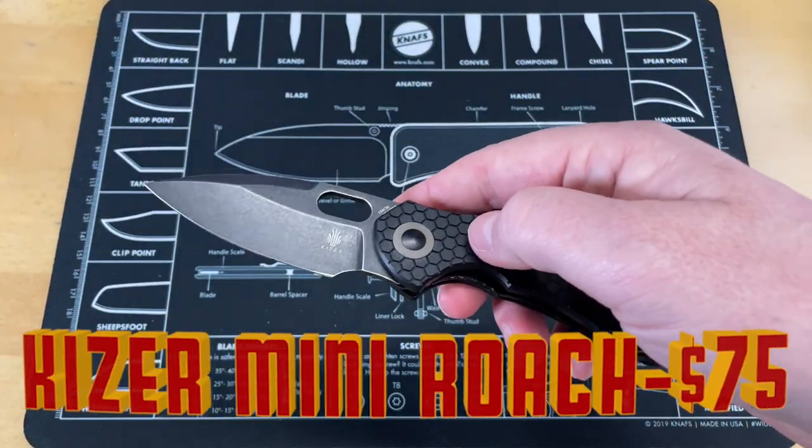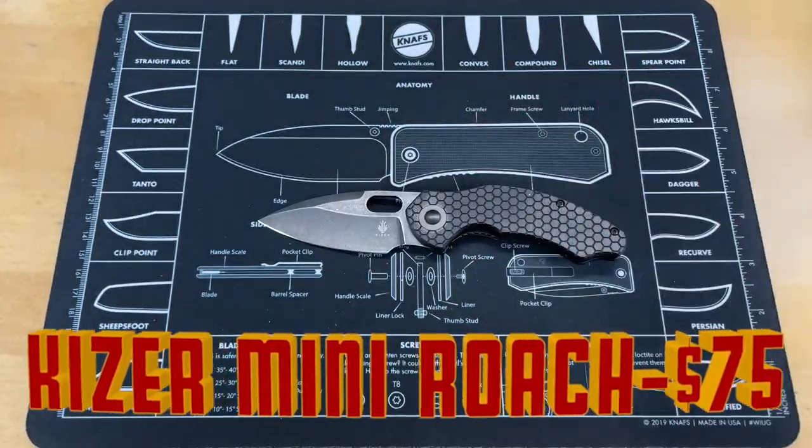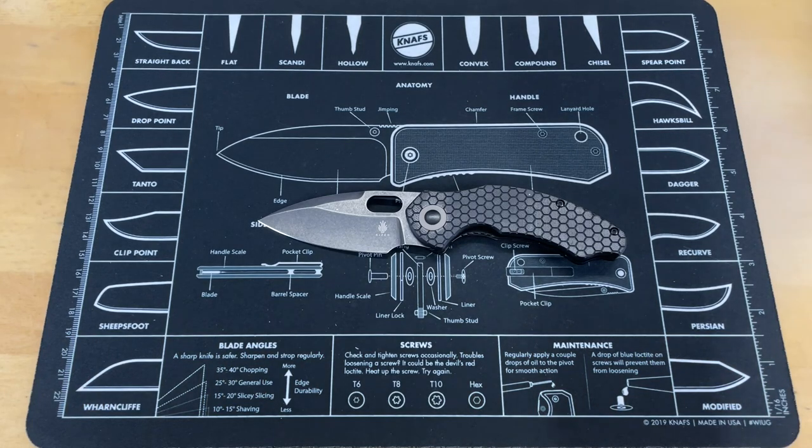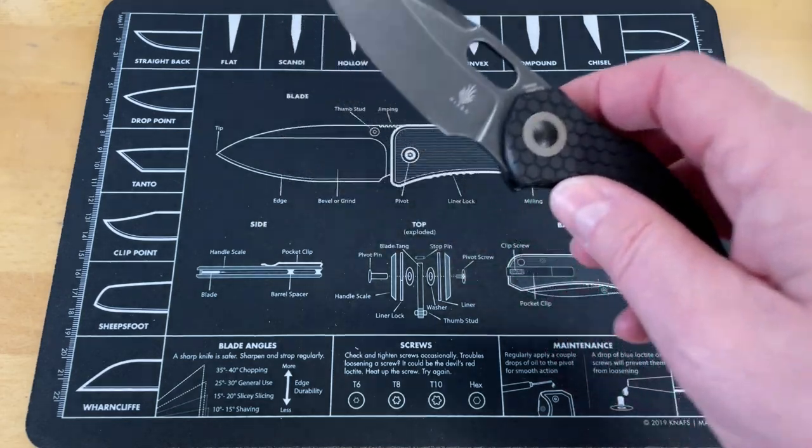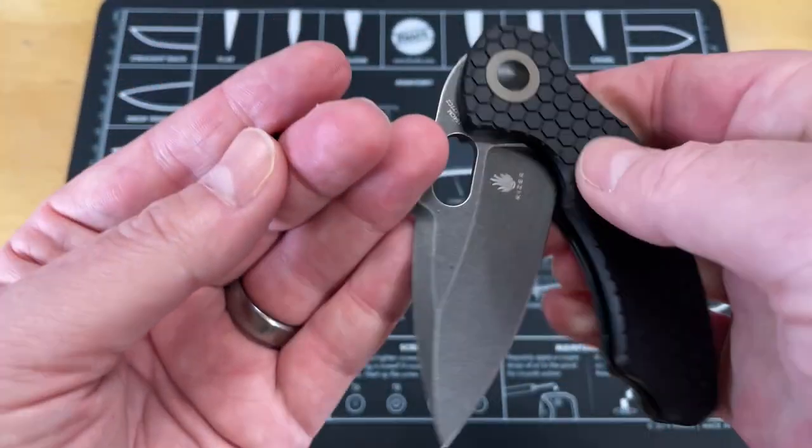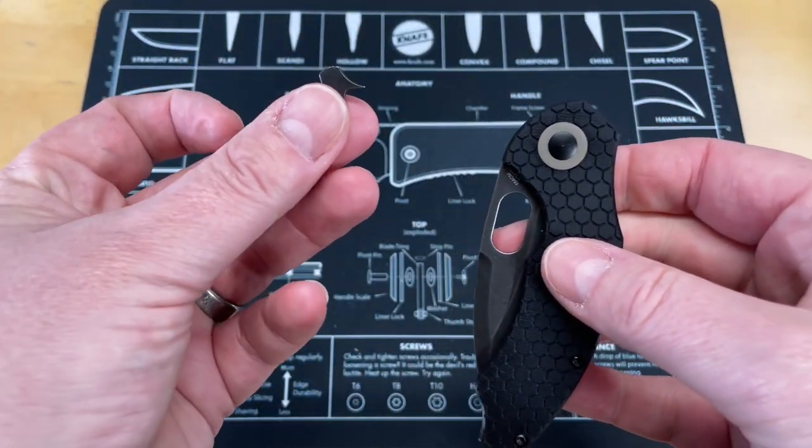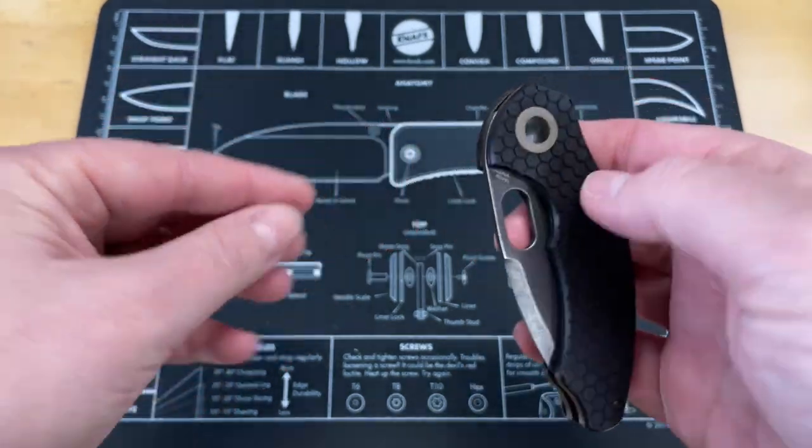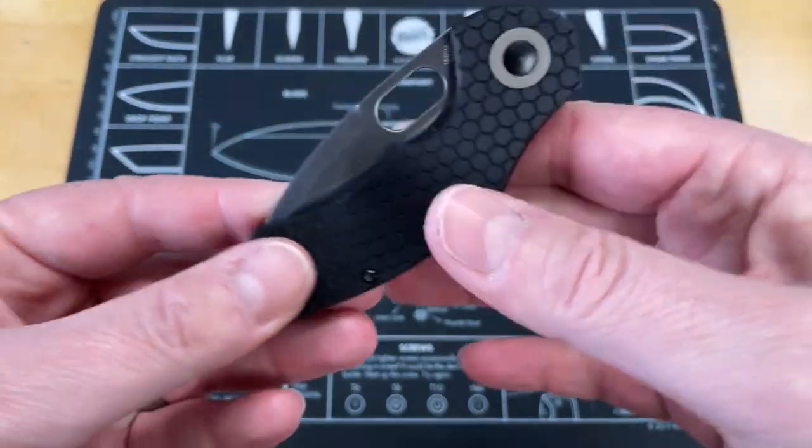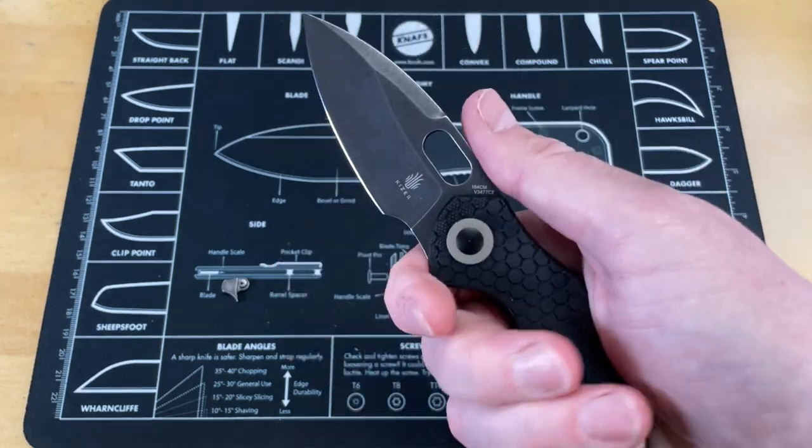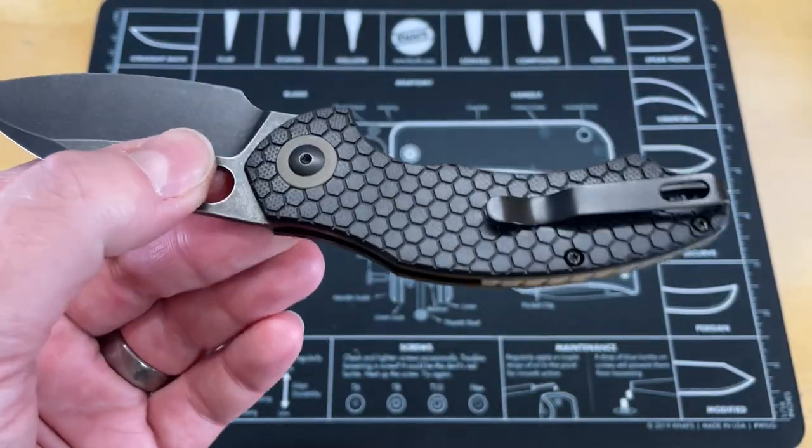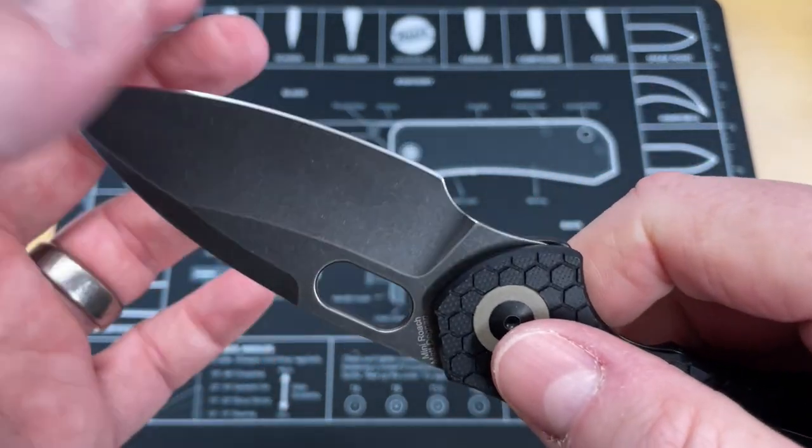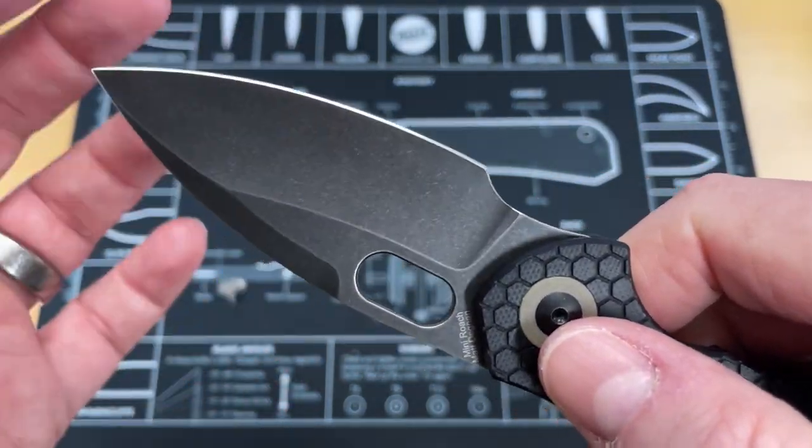This is the Kizer Mini Roach, another knife coming in at about the same price point, $75. This is a knife that bridges the gap between flipper tab and no flipper tab. You have a removable flipper tab that you can put on here. I prefer it without.